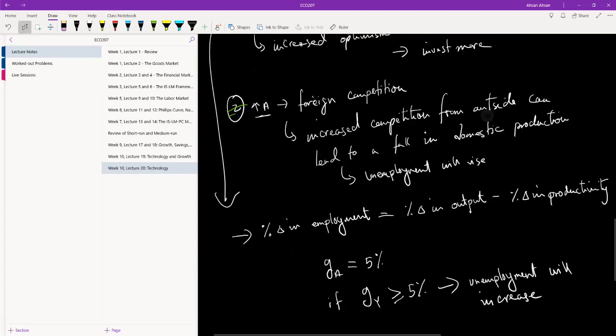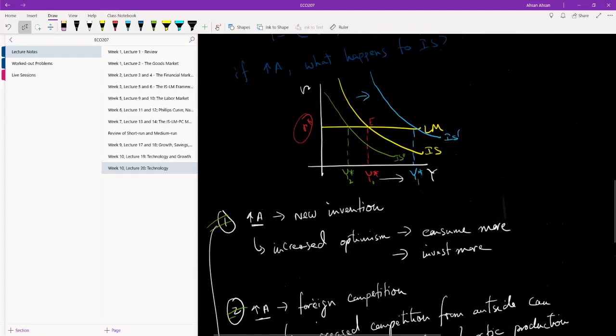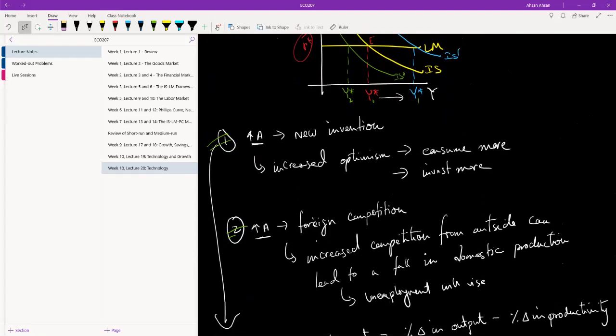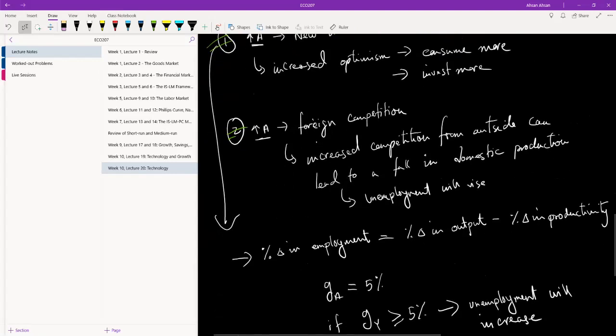But when you think of all the other jobs that we have created in the IT sector, 30 or 40 years ago there was no IT sector in Bangladesh. Now that sector hires millions of people. So we've lost jobs somewhere, we've created jobs elsewhere. In the short run, the analysis is quite easy. We see that there will probably be a fall in employment. But the next thing we are going to take a look at is technology in the medium run. And over here, the analysis is a bit more interesting.